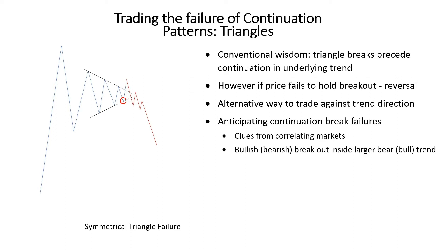Another way to anticipate and trade a failed breakout is by looking to fade the short-term triangle breakout in the direction of the longer-term trend. For example, if there is a bullish breakout on the five-minute chart but on the daily time frame the trend is bearish, then you can look to sell once price hits a key resistance level above the market and after the breakout takes place on the five-minute chart. Usually such breakouts will fail as price resumes in the direction of the longer-term and stronger trend.